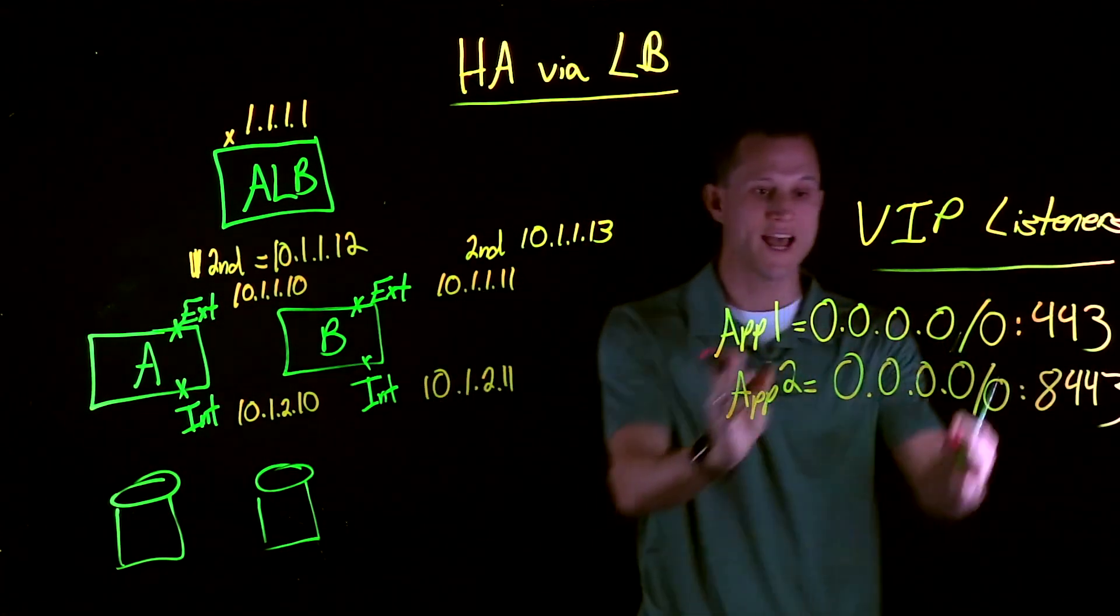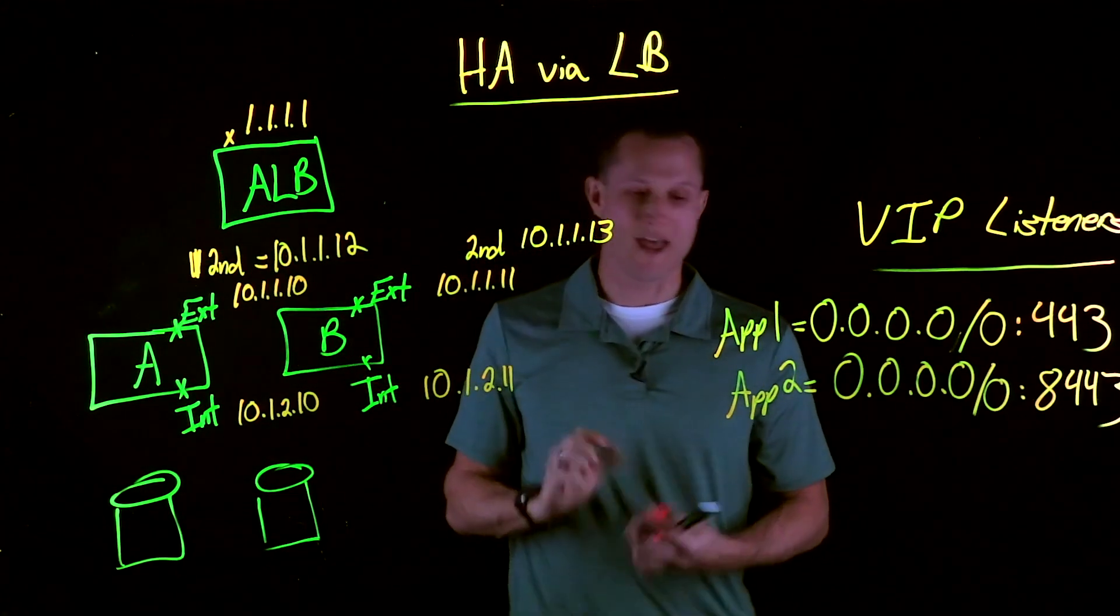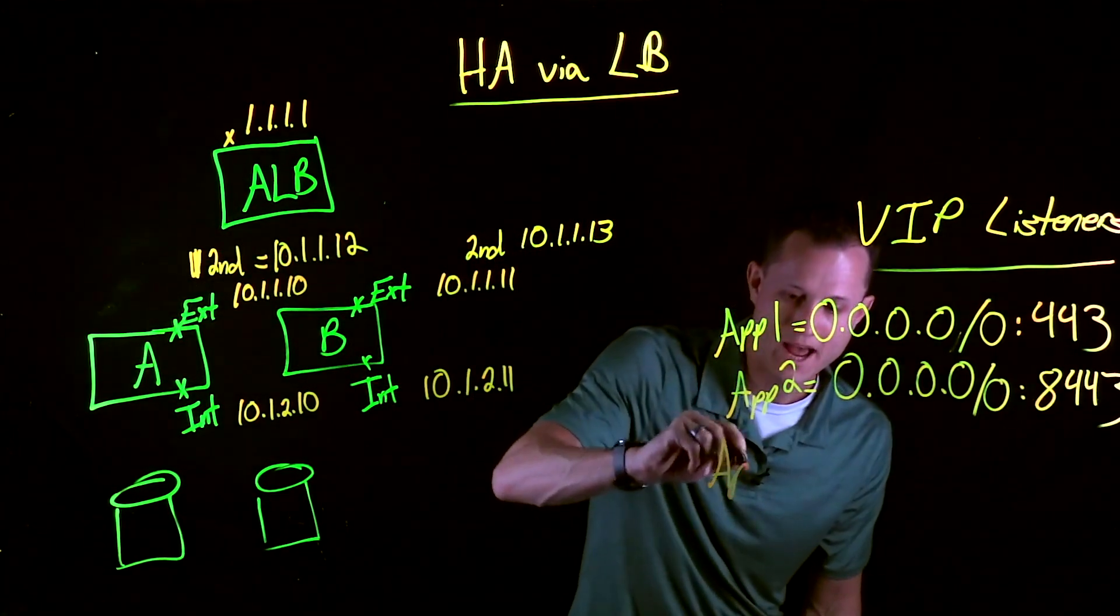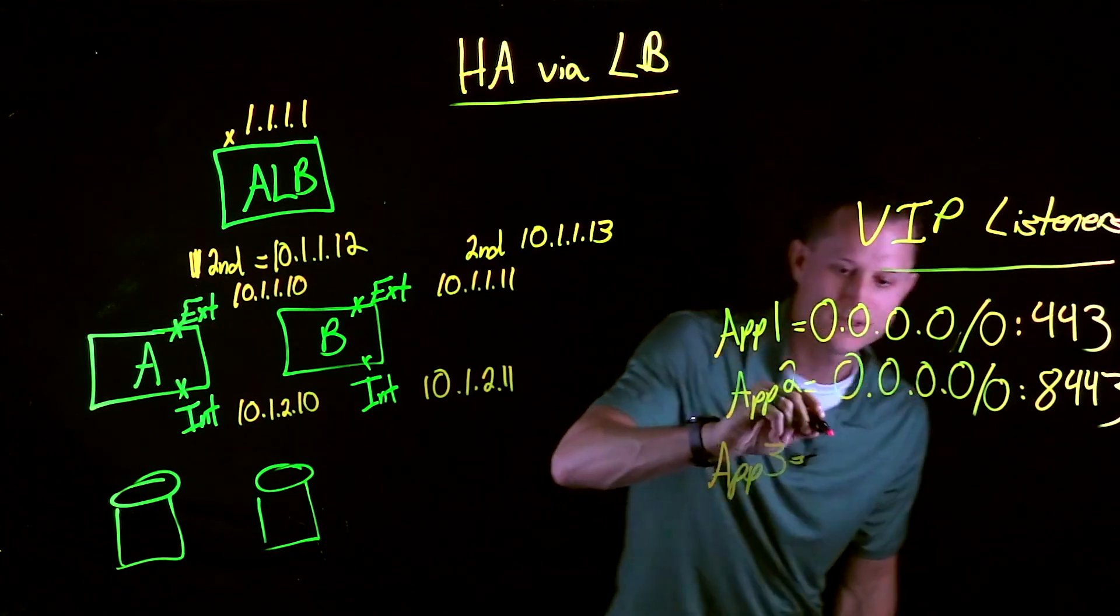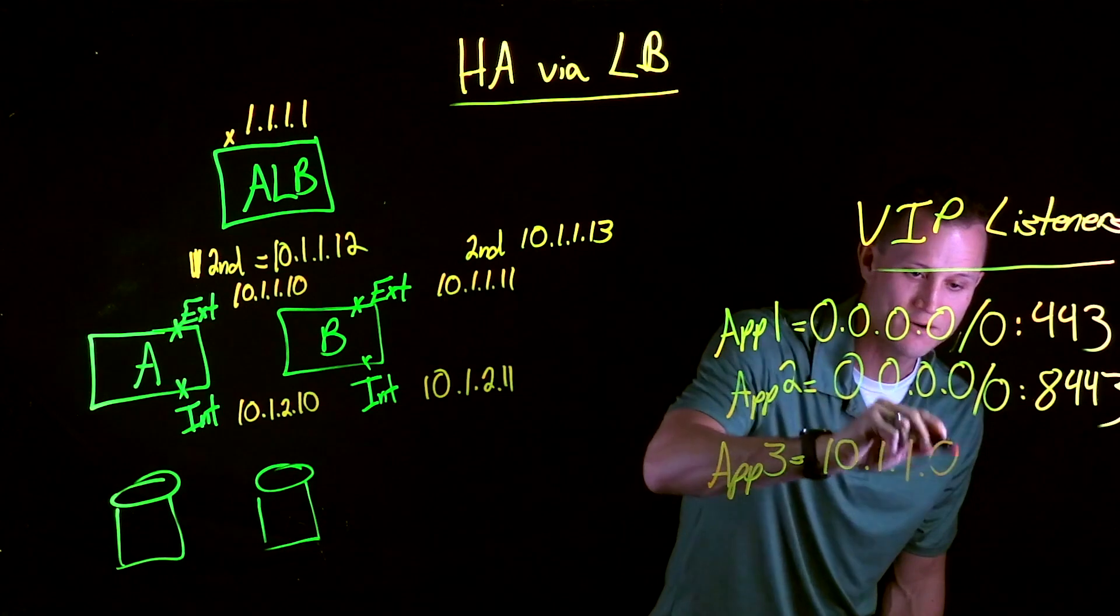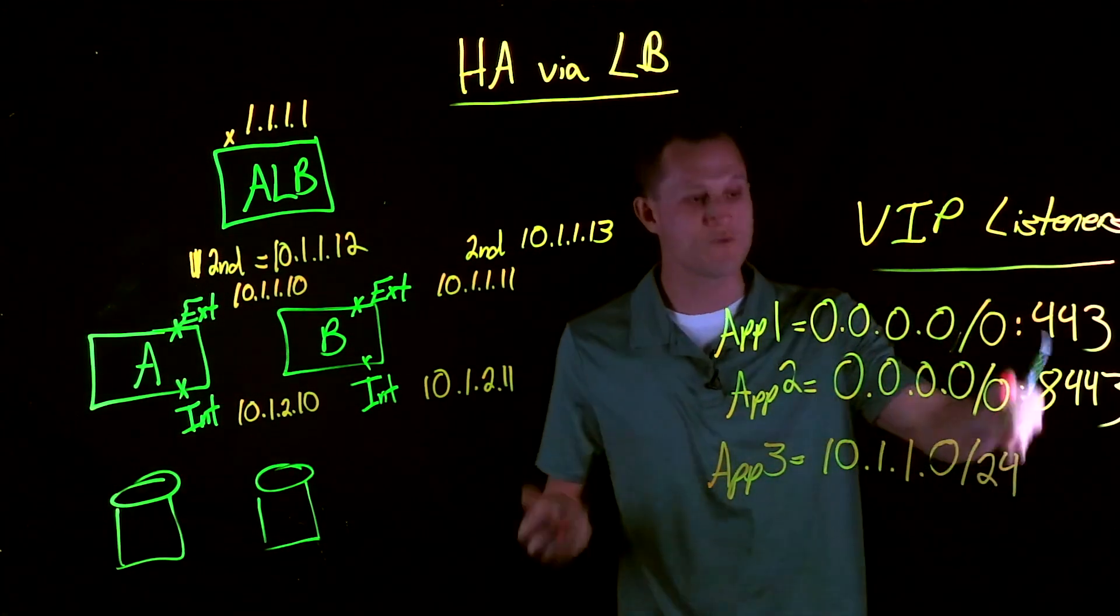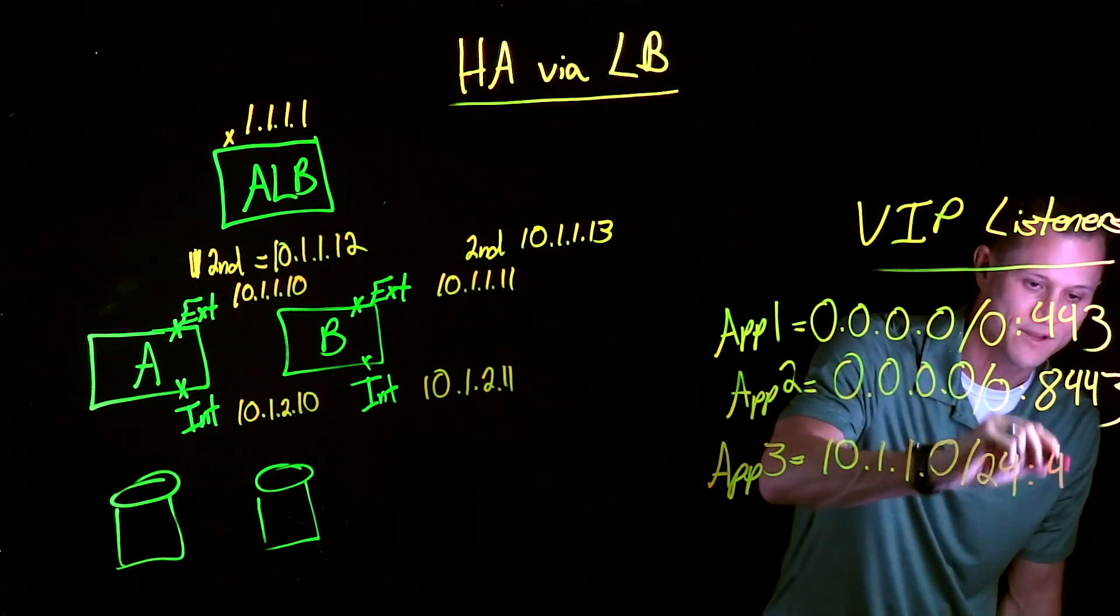Another option is to have an actual VIP listener in the segment of your network subnet. So an option could be app 3 equals 10.1.1.0/24 with the same concept. App A would have a port, app B would have a port. So let's draw the port numbers up there.